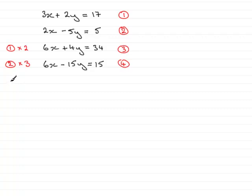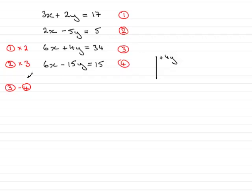So let's tell the reader that we're taking equation 3 and subtracting equation 4. We know that 6x subtract another 6x eliminates it — we just get no x's. Then we go on to the y terms — you've got to be very careful here. We have plus 4y, and we're subtracting minus 15y. Minus minus gives us a plus, so we get 4y plus 15y, which is plus 19y.